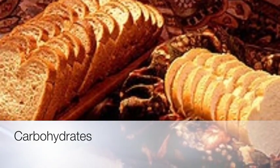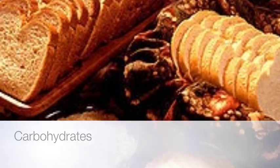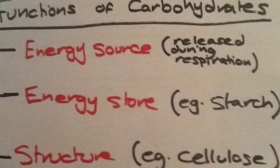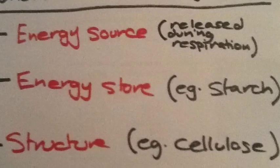Carbohydrates make up about 10% of the organic matter of a cell. The functions of carbohydrates in organisms include energy source released from glucose during respiration, an energy store, for example starch, and for structure, for example cellulose.